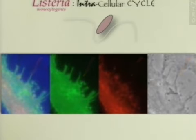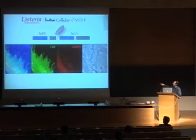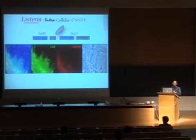There are two main bacterial proteins which are required for entry. InlA interacts with its receptor, E-cadherin, and mediates bacterial entry into polarized epithelial cells. Today I will speak mainly about a different pathway, which involves another member of the internalin family, InlB.